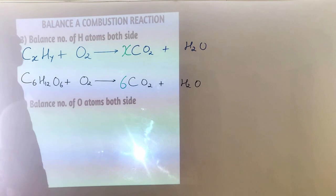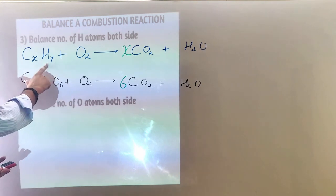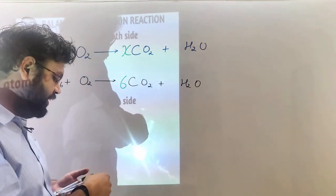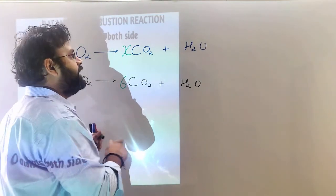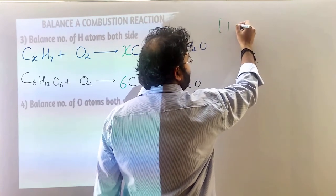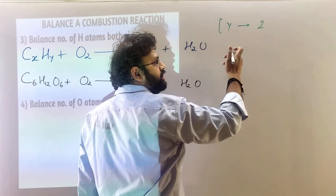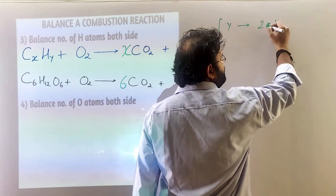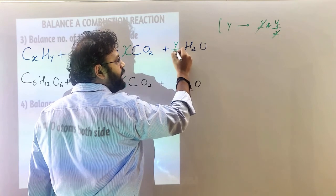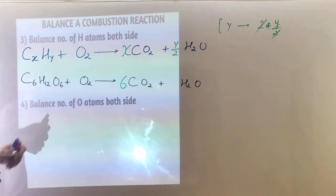Next step is to balance hydrogen atoms. We have y hydrogen atoms on the left side, and water (H2O) has 2 hydrogens. So we multiply H2O by y/2. For the glucose example, we have 12 hydrogen atoms, and water has 2, so we multiply by 12/2 = 6, giving us 6 H2O molecules, which accounts for 12 hydrogen atoms.